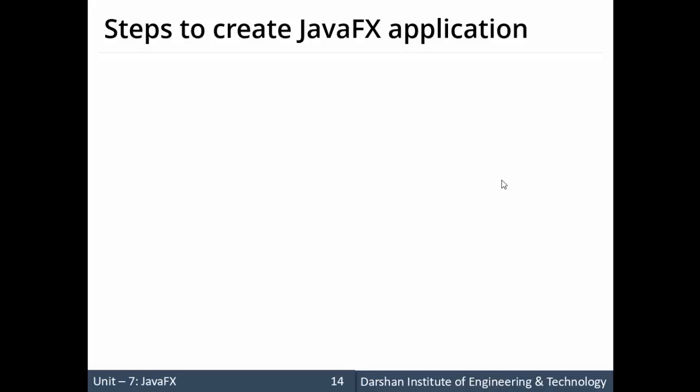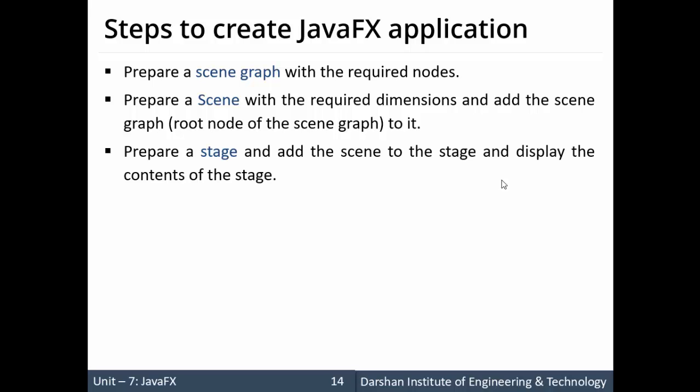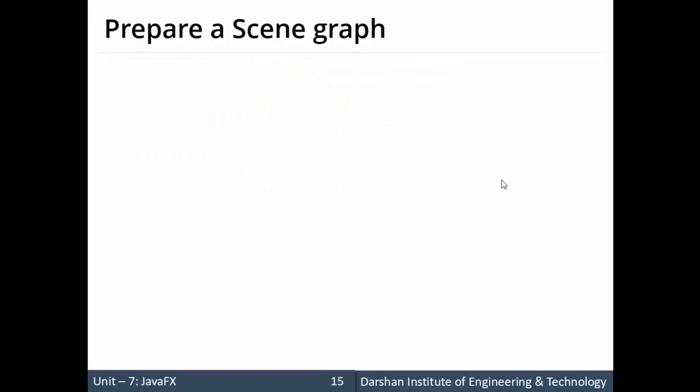The steps start with: first, create a scene graph with required nodes; second, create a scene with required dimensions and add the scene graph to the scene; third, prepare a stage and add the scene to the stage so we can display the content onto the stage.